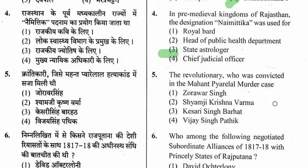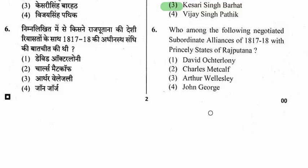Question 6: Who negotiated the subordinate alliance of 1817–1818 with the princely states of Rajputana? Options are David Ochterlony, Charles Metcalf, Arthur Wellesley, and John George. The right option is option 2 — Charles Metcalf.